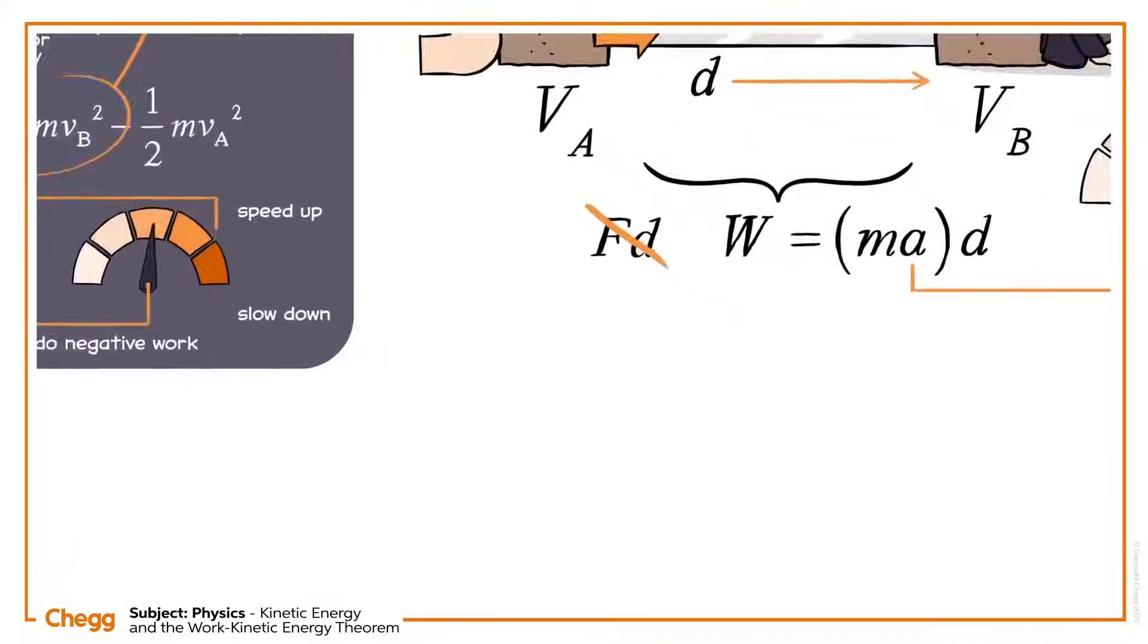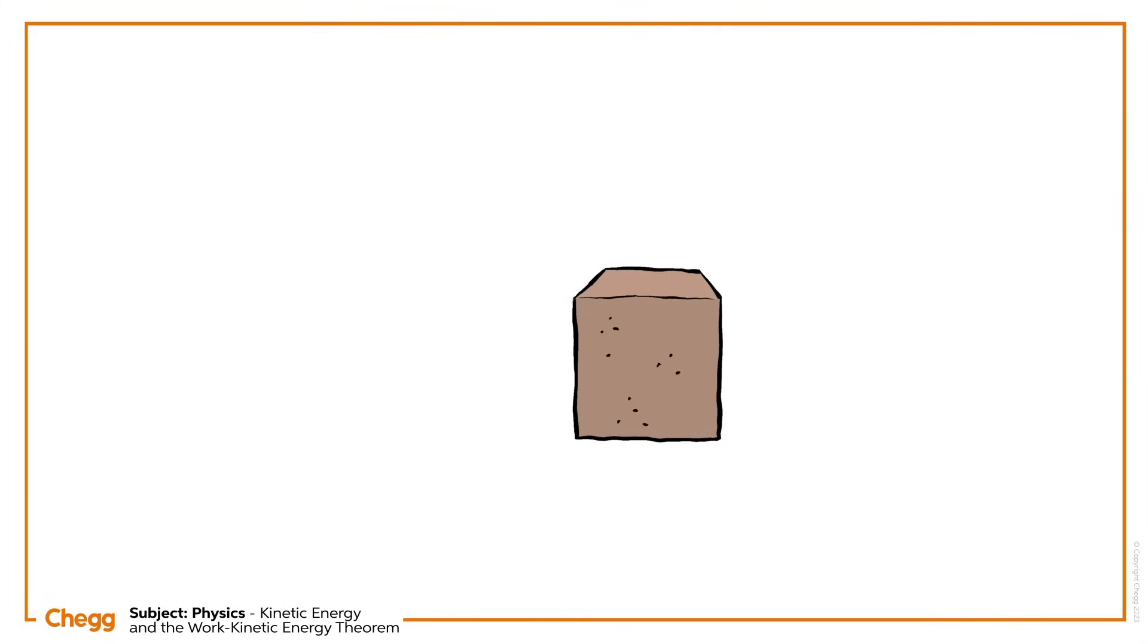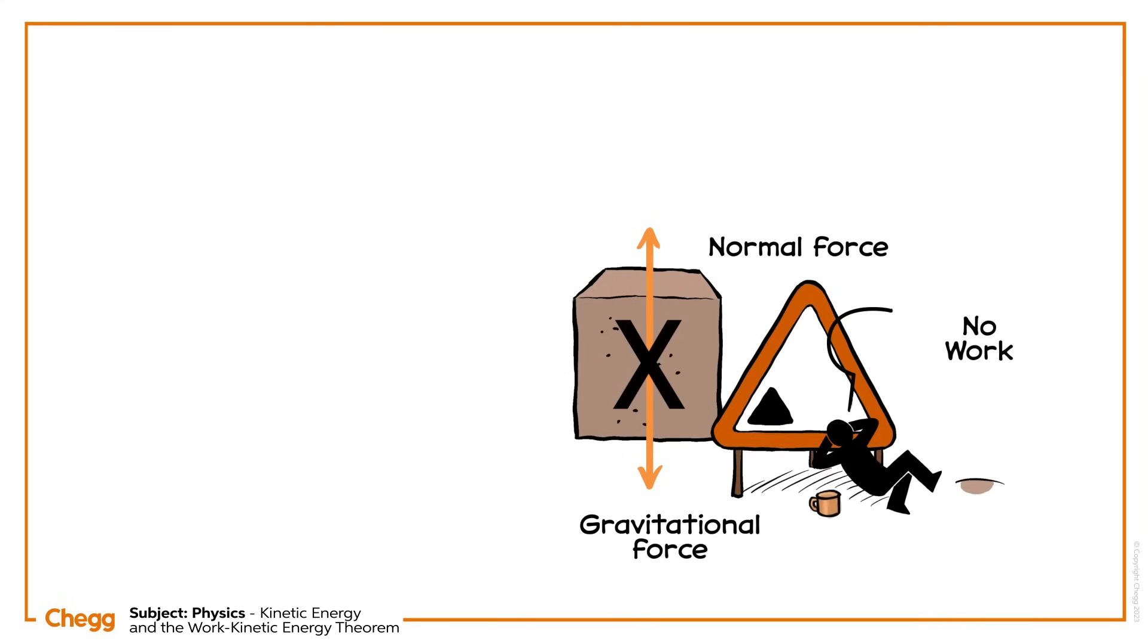It's worth noting that the example we've considered in this lesson is a simple one. The force applied moved the box in a straight line, parallel to its velocity. Though other forces do act on the box, namely gravity and a normal force, they cancel each other out and do no work. The net force arises solely from the applied force and friction.